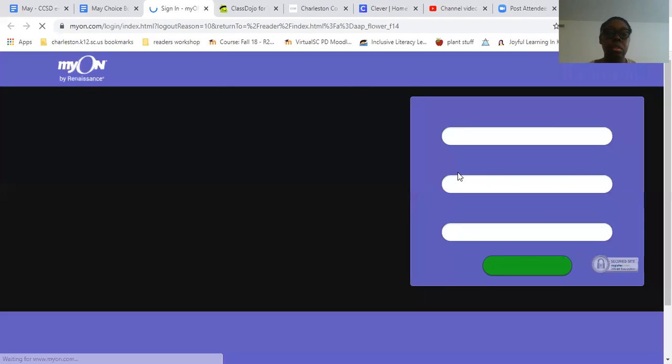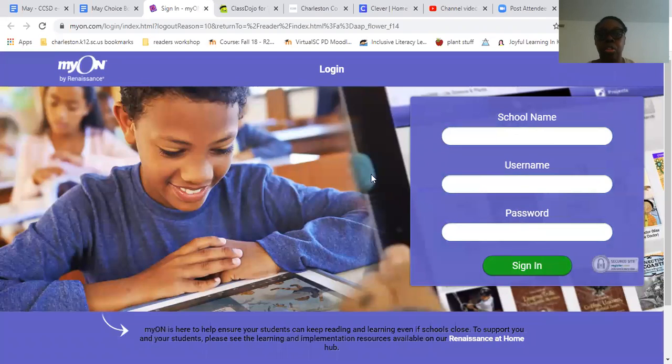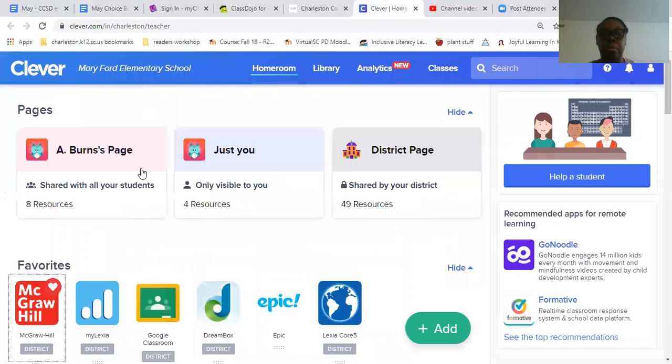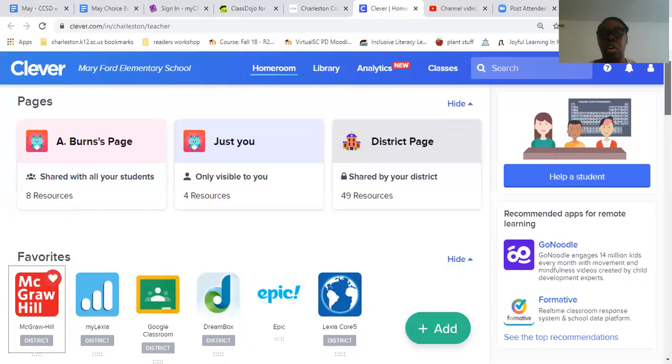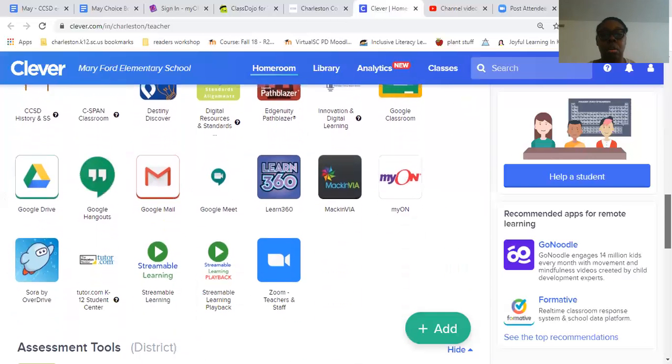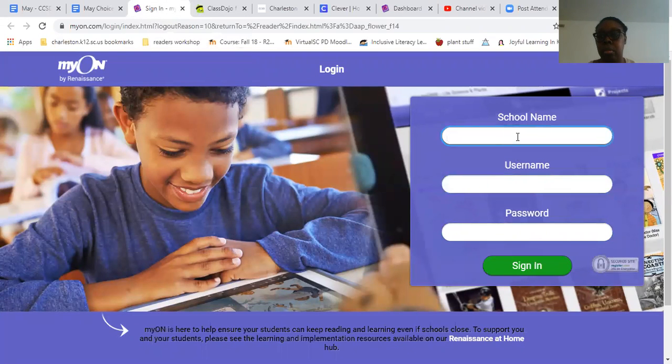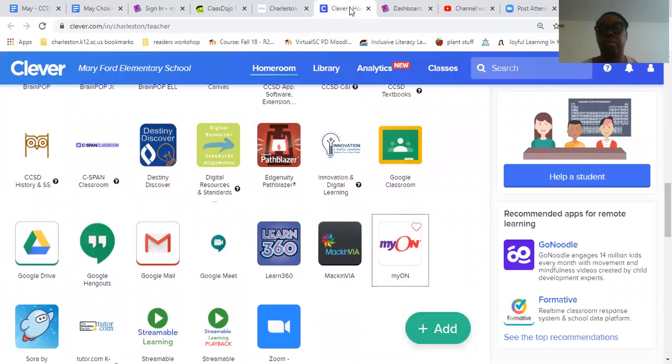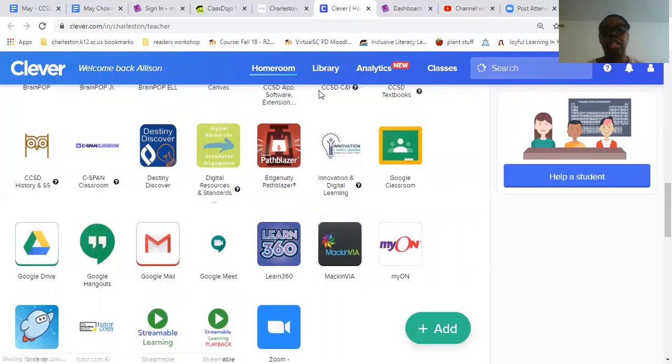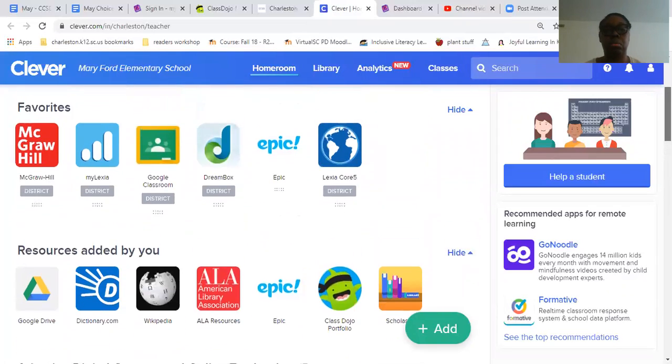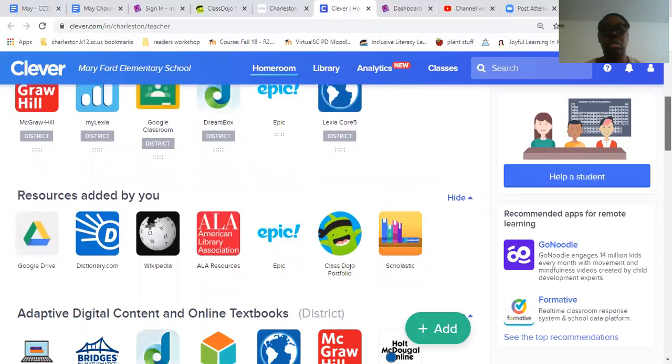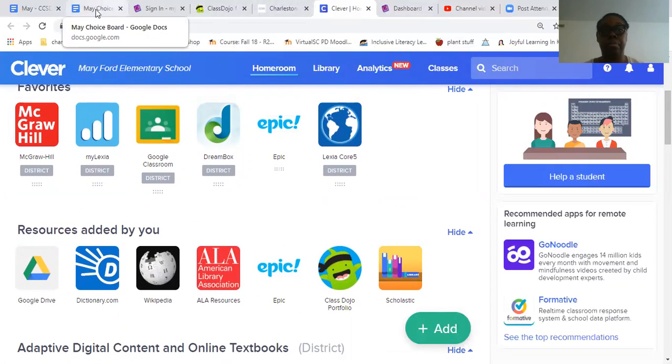And this is on MyON. And you have access to MyON through Clever. So that's where I'm going to go. I'm going to click on Clever. And I'm going to go to MyON because I'm already in Clever. And then that way I do not have to go through that. I'm trying to see because you shouldn't have to log in. It should automatically take you there if you sign into Clever.